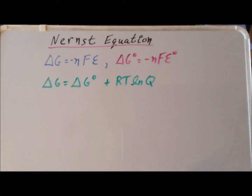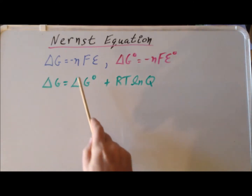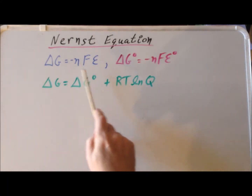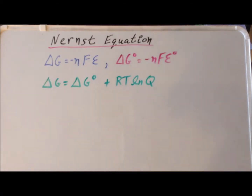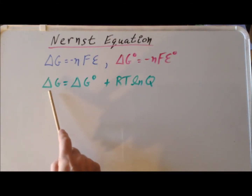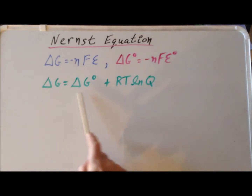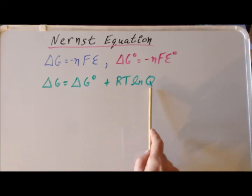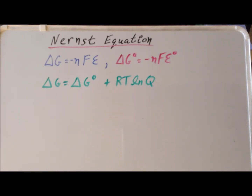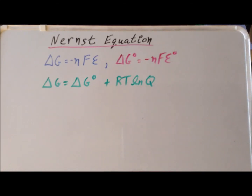Next, we recall the relationship between the standard Gibbs energy, delta G naught, and the Gibbs energy, delta G, which is that delta G equals delta G naught plus RT times the natural log of Q, where Q is the reaction quotient, T is the thermodynamic temperature, and R is the gas constant.